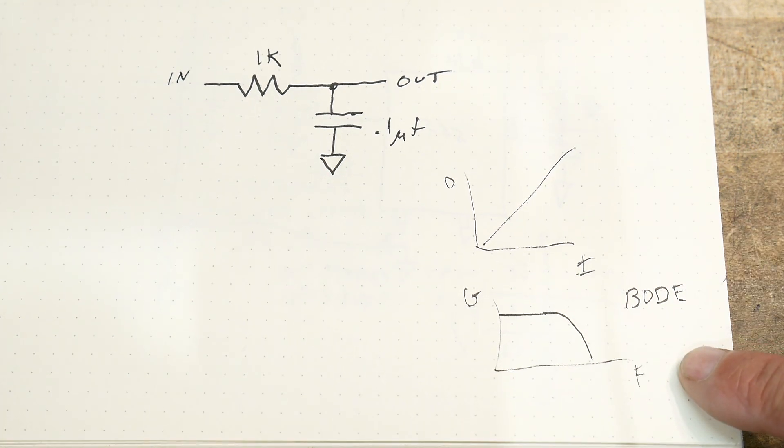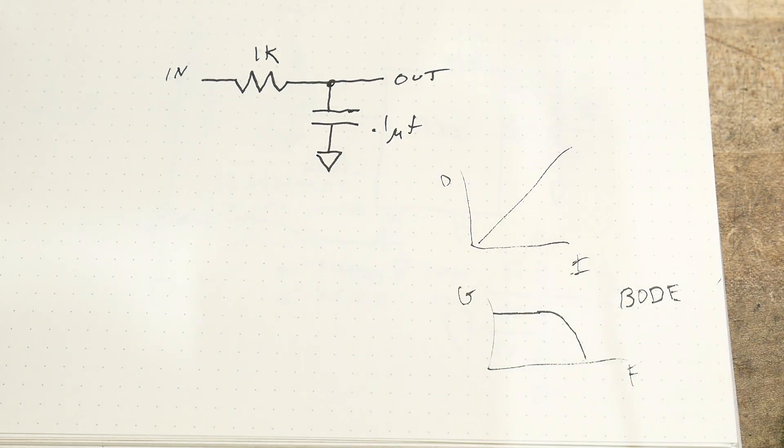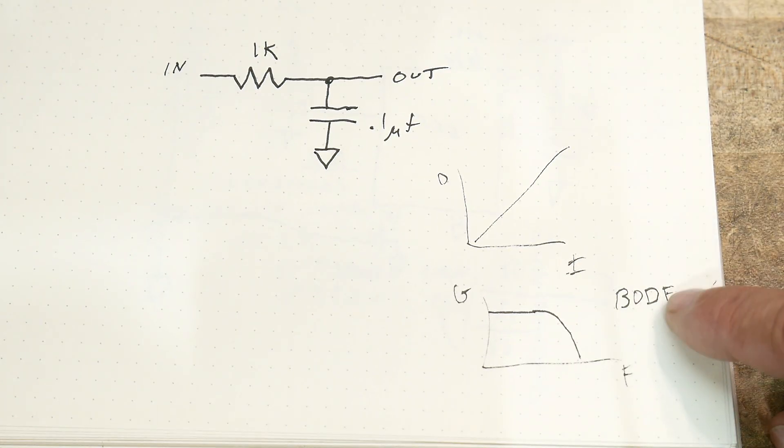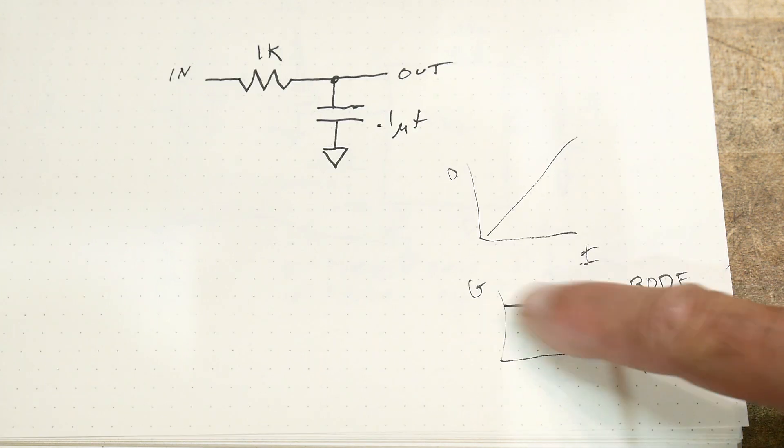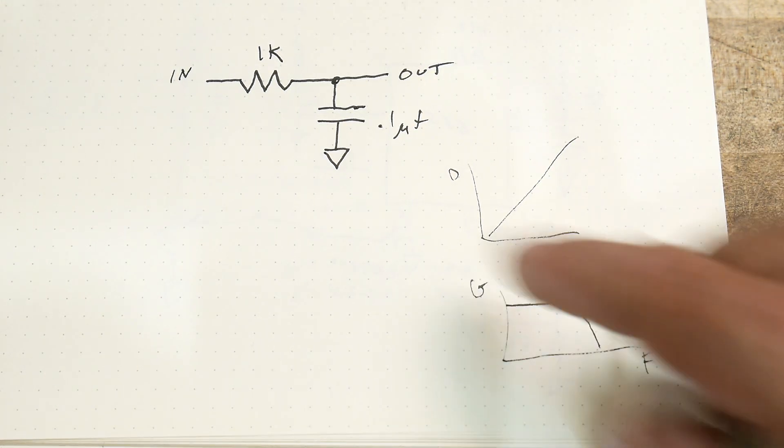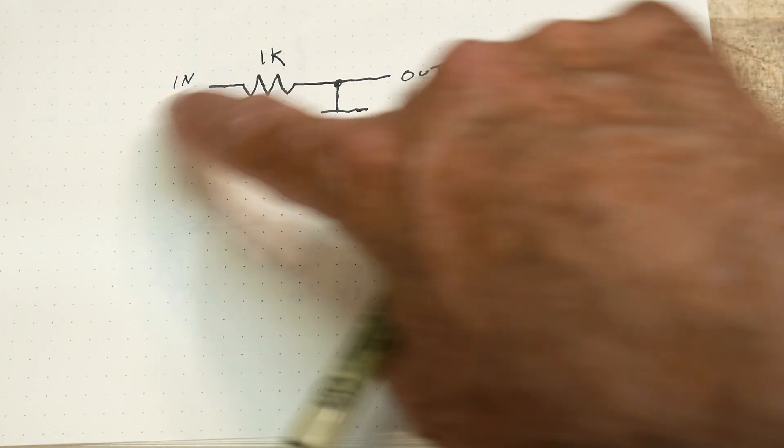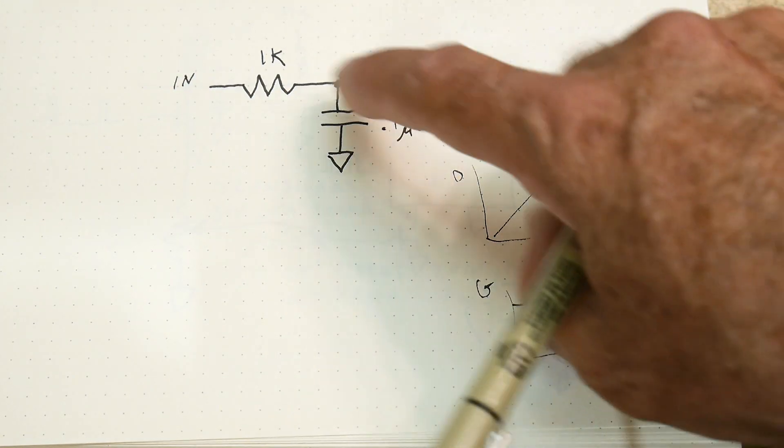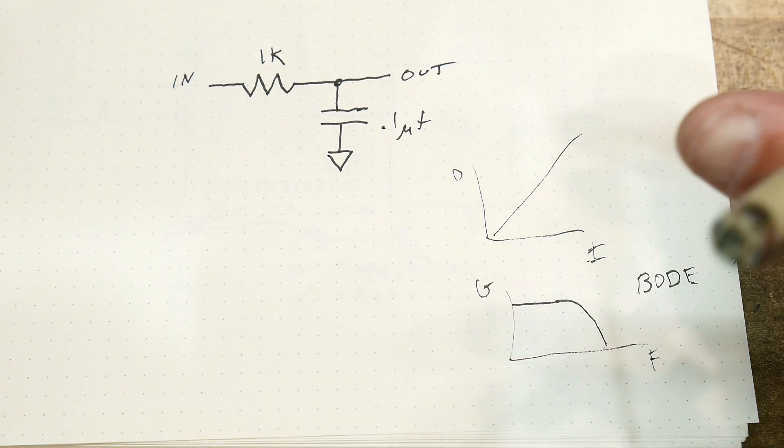And a Bode plot is this plus - there's two things the Bode plot does. It plots this, just as I say. It also plots the phase information. Does the phase change from the input to the output, or does it stay the same? Capacitors will change the phase of things. Inductors will change the phase of things.